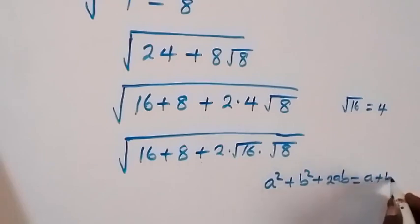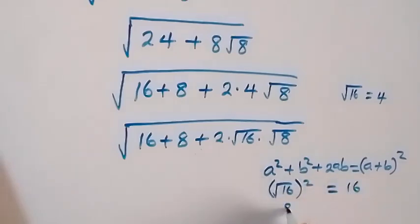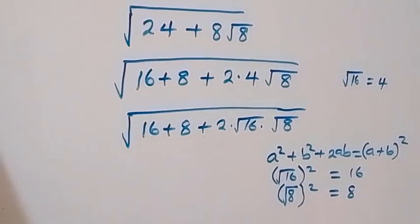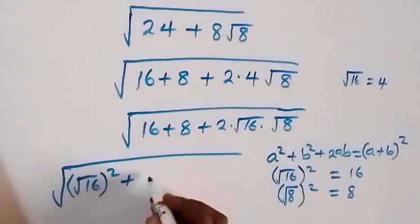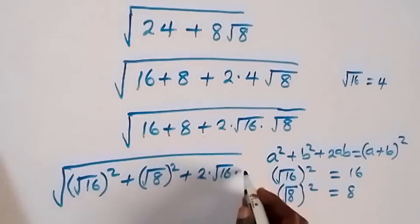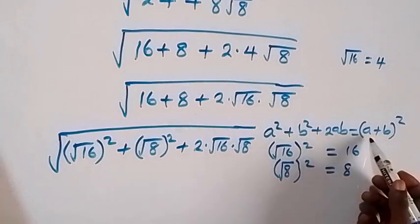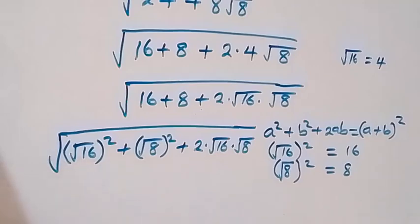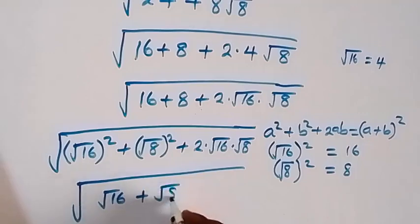We can write this in the format a squared plus b squared plus 2ab, which can be written as a plus b, all squared. Here we write 16 as root 16 squared and 8 as root 8 squared. So what we have becomes the square root of root 16 squared plus root 8 squared plus 2 times root 16 times root 8, where a is root 16 and b is root 8. This gives us the square root of root 16 plus root 8, all squared.